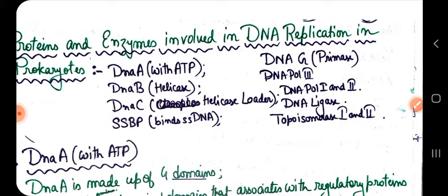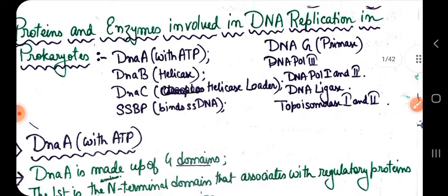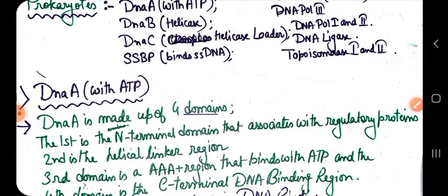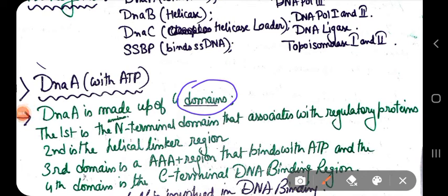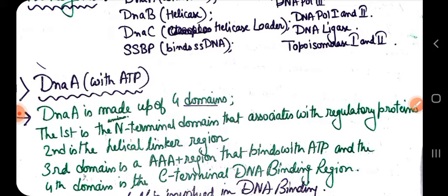The first one we will see is DnaA. DnaA is made up of four domains. Domains are generally defined as parts of a protein structure that can fold independently of the remainder of the protein — they are distinct functional or structural units of a protein. In simple words, they are regions.